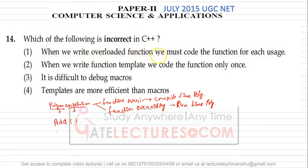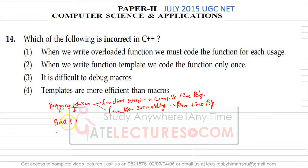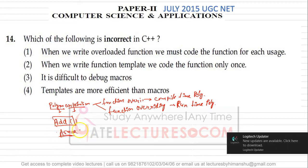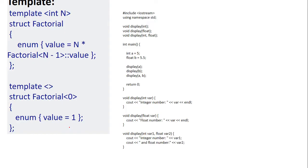The first statement says when we write an overloaded function we must code the function for each use. For example, if I have a function named 'add', I have to write its definition for every use. Similarly for an area function — if I want the area of a square, I write it for square; for rectangle, I write it differently.